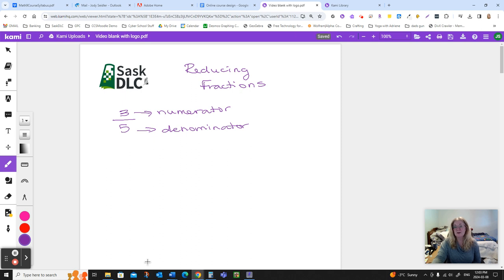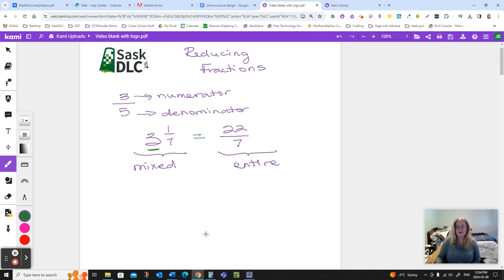When we go to reduce fractions or do just about anything to a fraction, remember anything you do to the top, you also have to do to the bottom or you've changed the value of the fraction. Now, if I have something like 3 and 1/7 or 22 over 7, this one is called a mixed fraction. This one's called an improper fraction. These two things are actually equal. We're not going to talk about how to convert that right now, but those terms might come up as we're working.